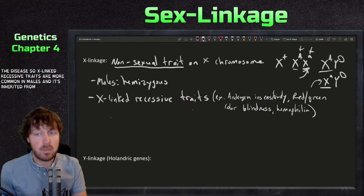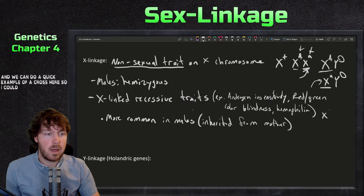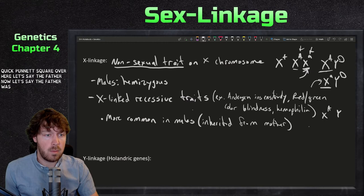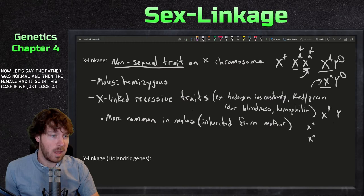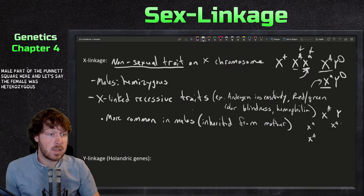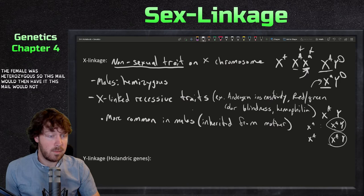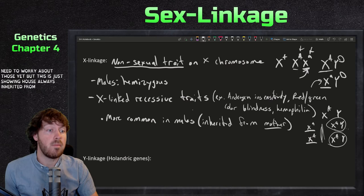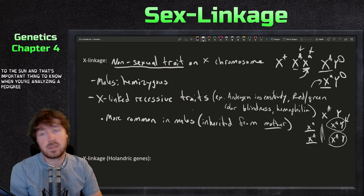A quick Punnett square example: if the father is normal and the female is heterozygous, then looking at the male offspring, one son would have it and one would not. This illustrates how X-linked recessive traits are always inherited from the mother to the son — an important thing to note when analyzing pedigree charts in a future chapter.